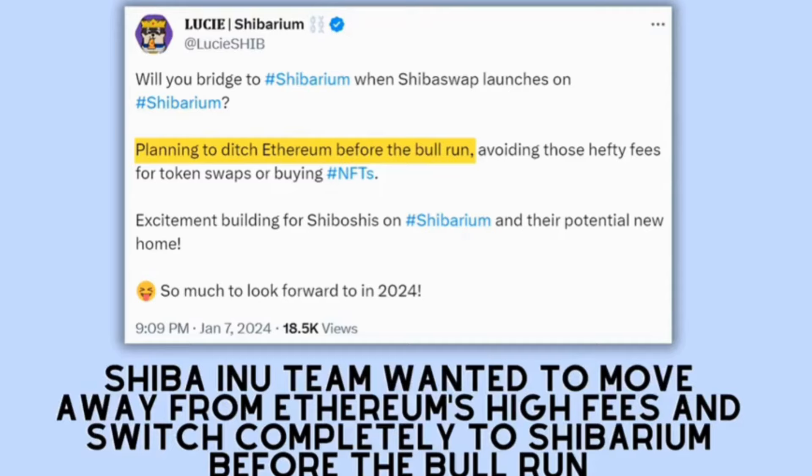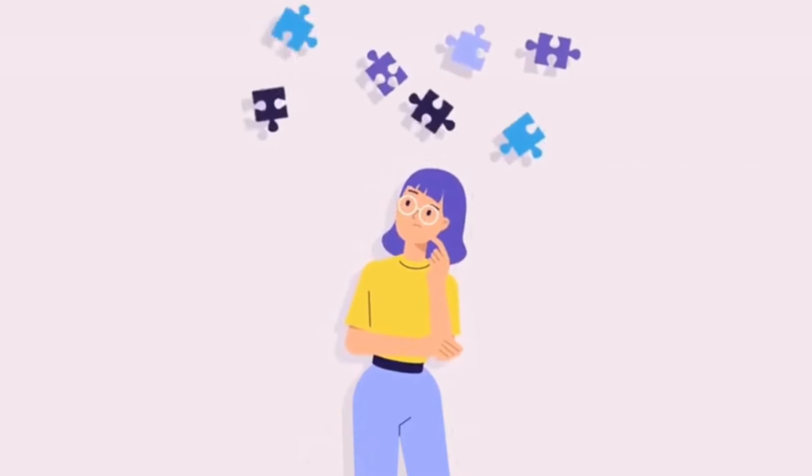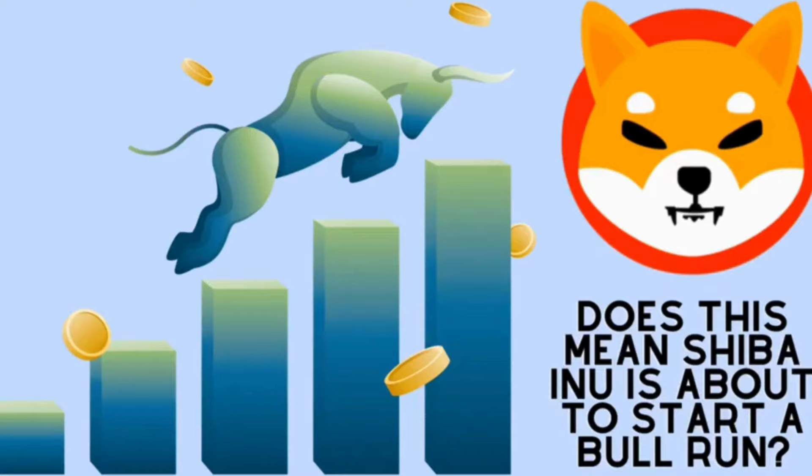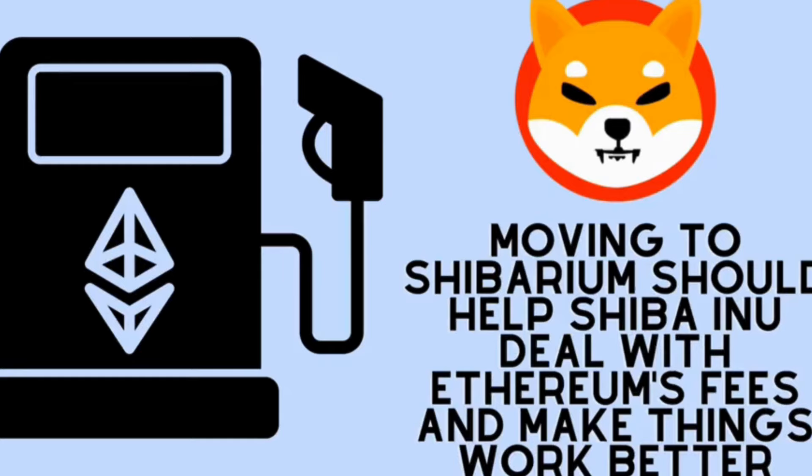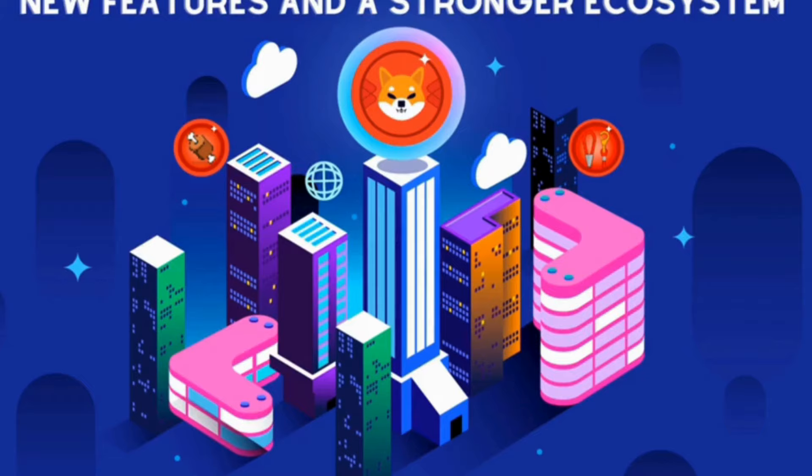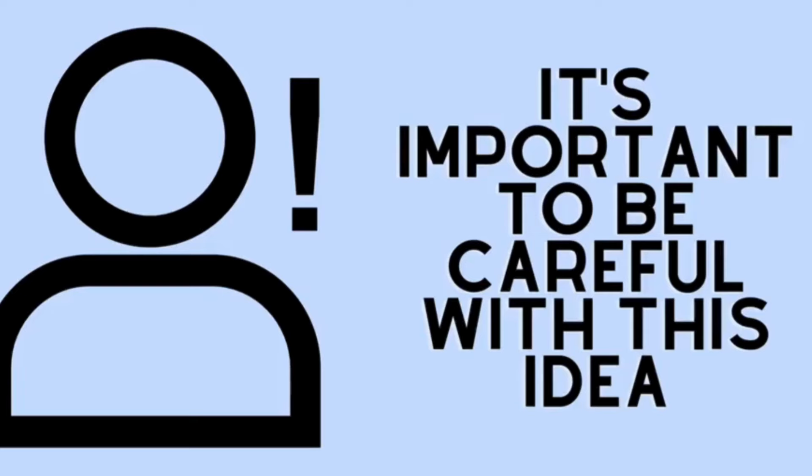Many people may remember that the Shiba Inu team wanted to move away from Ethereum's high fees and switch completely to Shibarium before the bull run. So now that ShibaSwap is moving to Shibarium, some might wonder, does this mean Shiba Inu is about to start a bull run? It's tempting to think so, given the timing and the project's goals. Moving to Shibarium should help Shiba Inu deal with Ethereum's fees and make things work better. This could lead to new features and a stronger ecosystem for Shiba Inu.